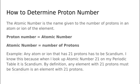The atomic number is the name given to the number of protons in an atom or ion of the element. Proton number equals the atomic number. Any atom or ion that has 21 protons has to be scandium. I know this because when I look up atomic number 21 on my periodic table it is scandium. By definition, any element with 21 protons must be scandium.